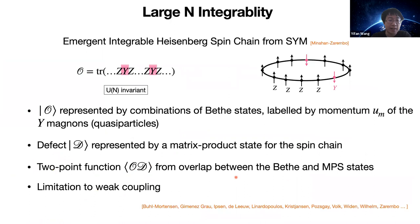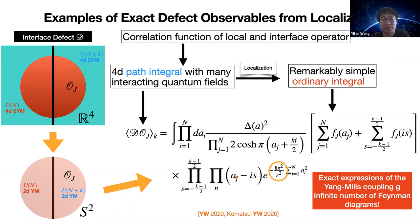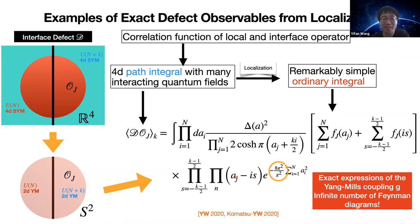An audience member asks whether the result is non-analytic in the coupling constant. The answer is that yes, it contains not just perturbative terms but also non-perturbative terms, so perturbative diagrams alone would not give this result. With more sophisticated resummation, like Borel resummation keeping track of potential non-perturbative ambiguities, one might obtain this answer, but it is unclear whether people have attempted that. The localization procedure itself is exact — there is no approximation and no conjecture.